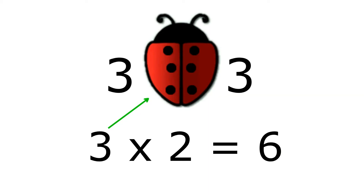This is basically what multiplication is — if one wing has three dots, how many dots would you have with two wingfuls of spots? We've got three plus another three. So when we say two times something, we mean take the number and add another of it. Two times three just means three add another three.